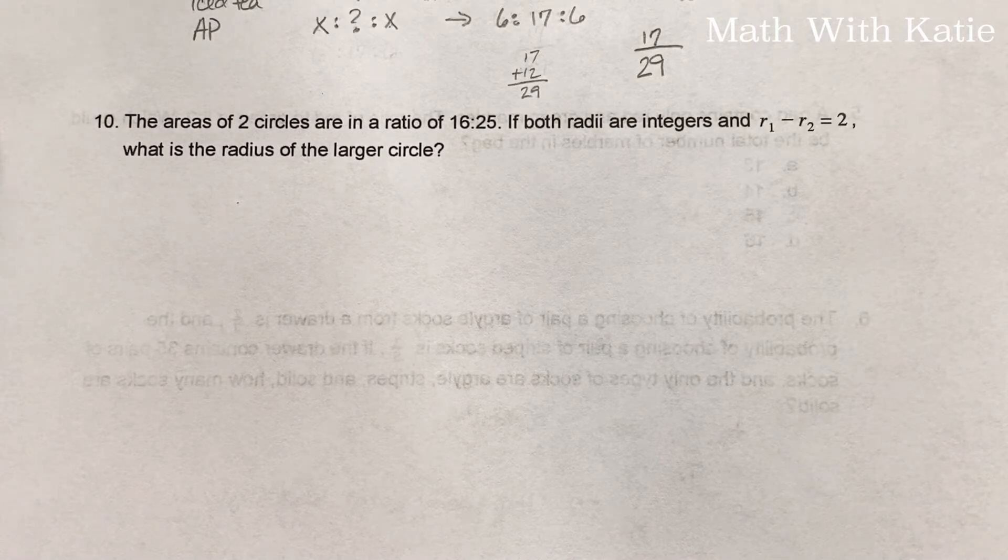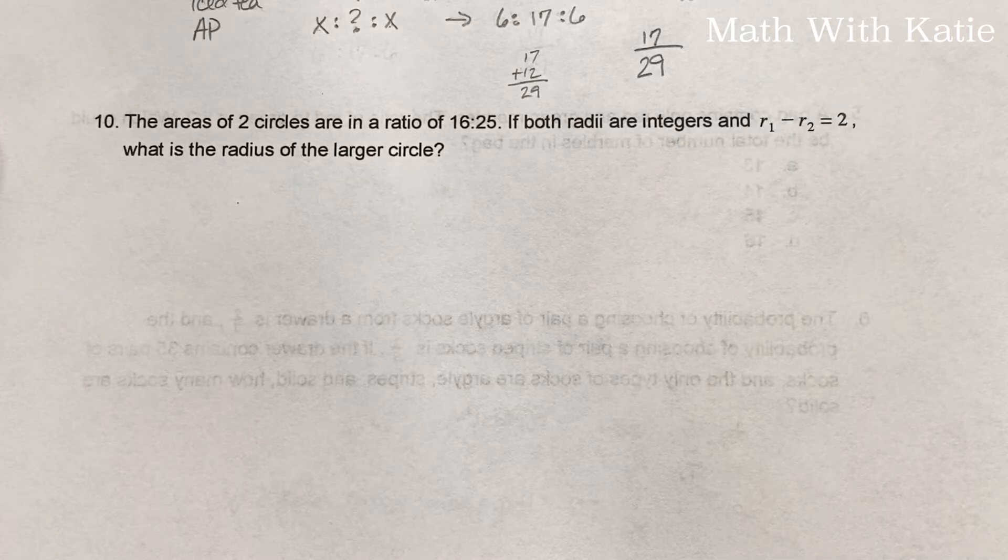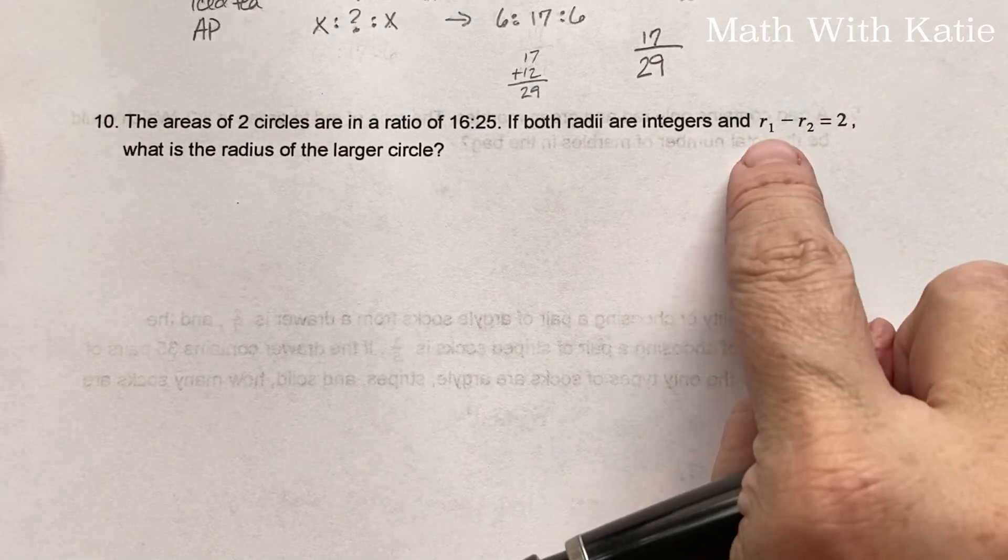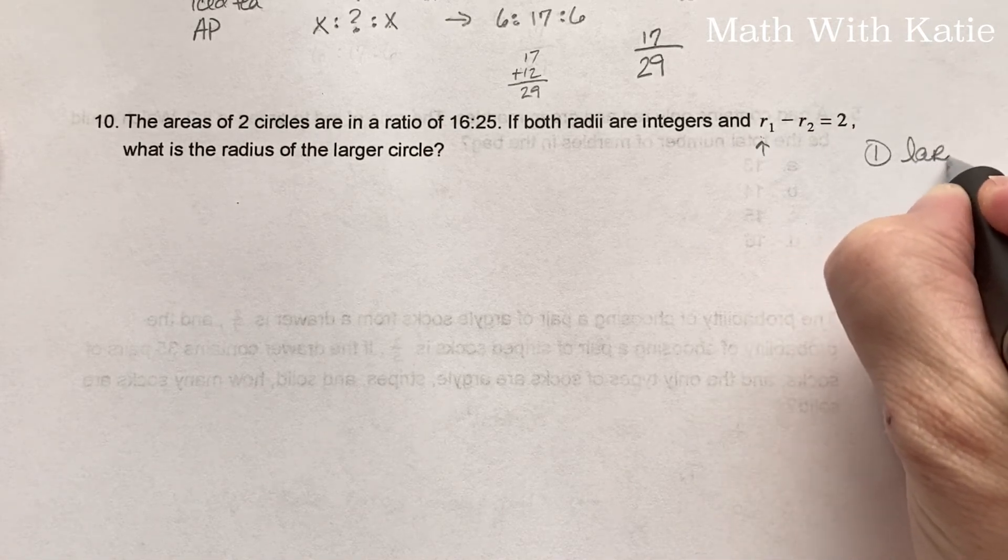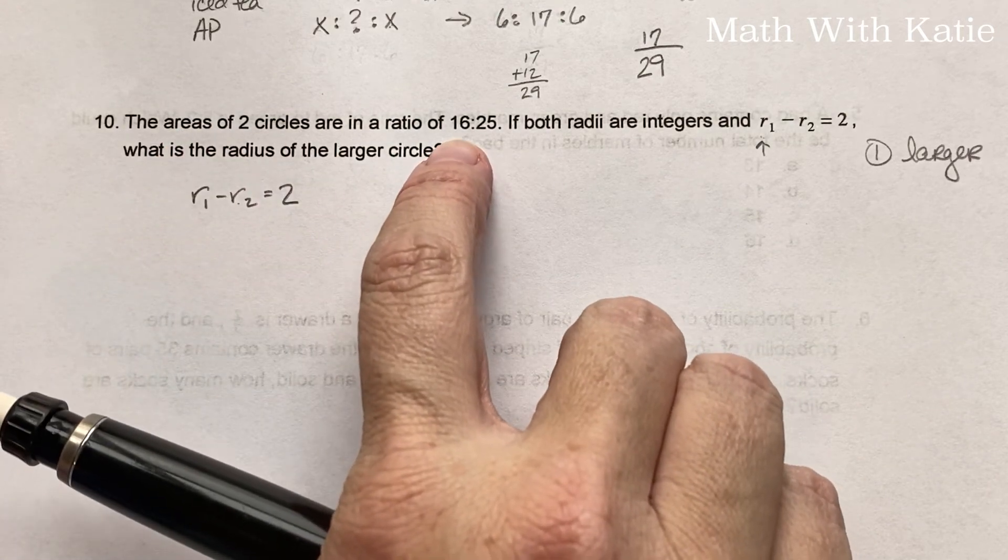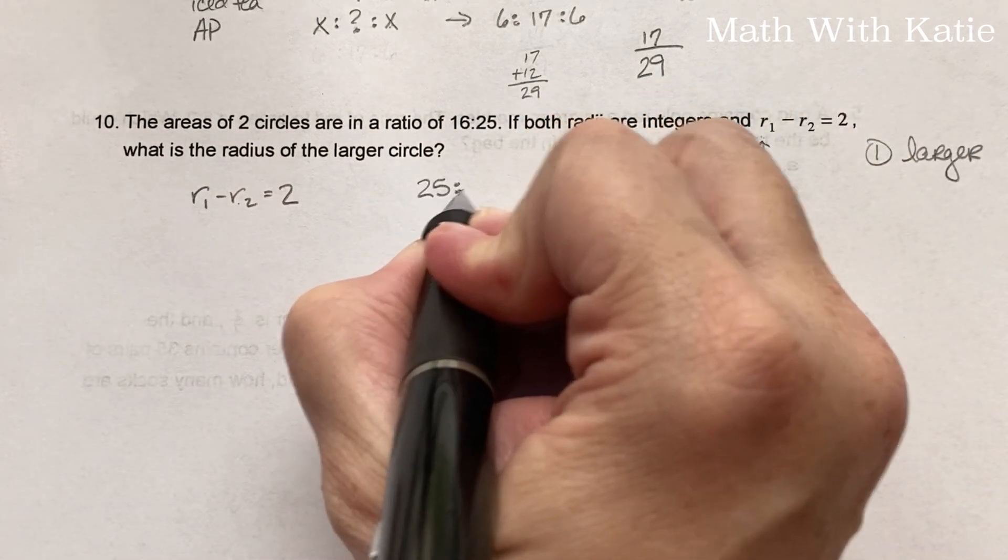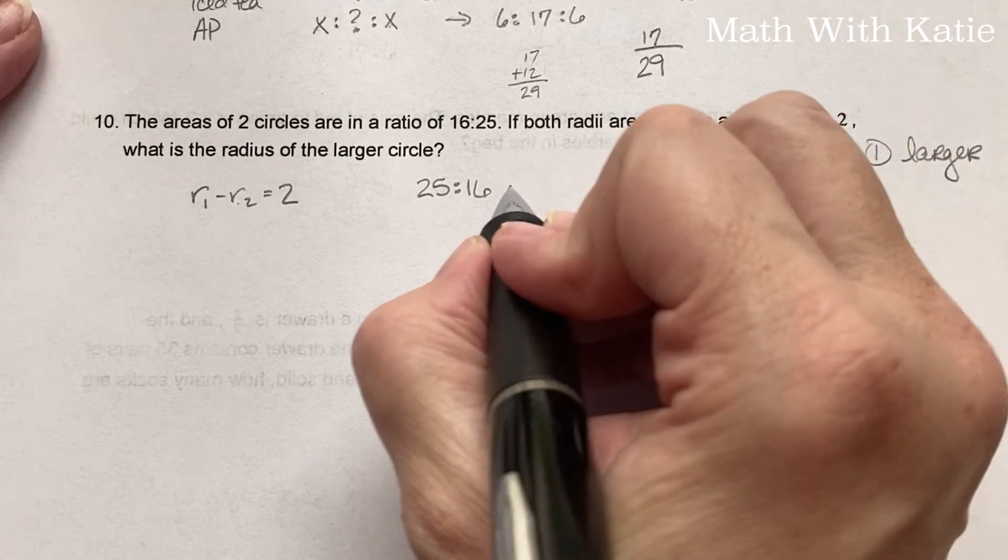Last one. The area of two circles are in a ratio of 16 to 25. If both radii are integers and R1 minus R2 is two, what is the radius of the larger circle? So first of all, we know that our larger circle is going to be the first circle because in order to get a positive number, the larger number has to be in front. So circle one is larger. R1 minus R2 equals two. Now the two circles are in a ratio of 16 to 25. Since the one is in front here, let's switch this to 25 to 16 to keep our larger circle always on the left.